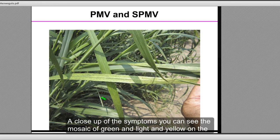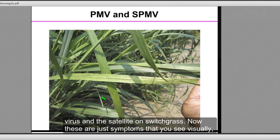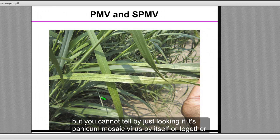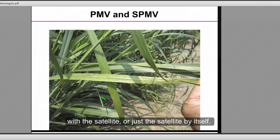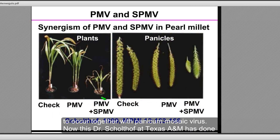The effect is severe stunting — the plant is weak and will produce very little biomass. A close-up of the symptoms shows a mosaic of green, light, and yellow on the leaves — typical symptoms of panicum mosaic virus and its satellite on switchgrass. These are just symptoms you see visually; you cannot tell by looking whether it's PMV alone, the satellite alone, or both together. Usually the satellite will not occur by itself because it cannot replicate on its own.